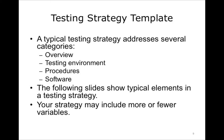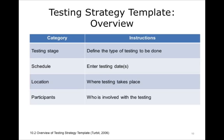Your strategy may include more or fewer variables. Typical elements to address the overall testing strategy include: the testing stage — define the type of testing to be done; schedule — enter testing date or range of dates; location — where testing takes place; and participants — who is involved with the testing.